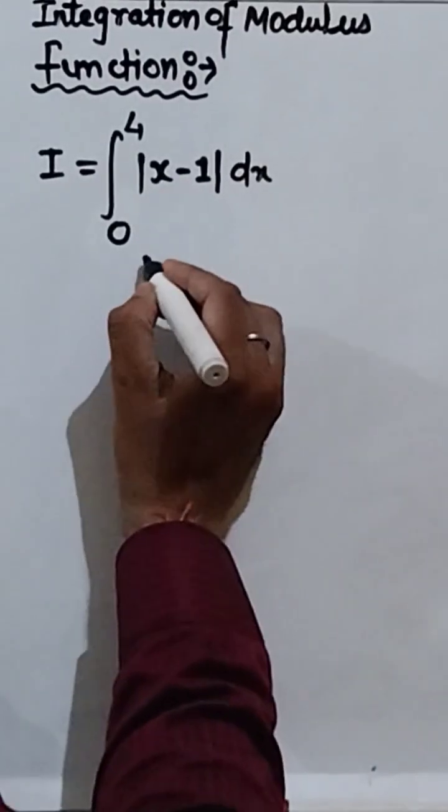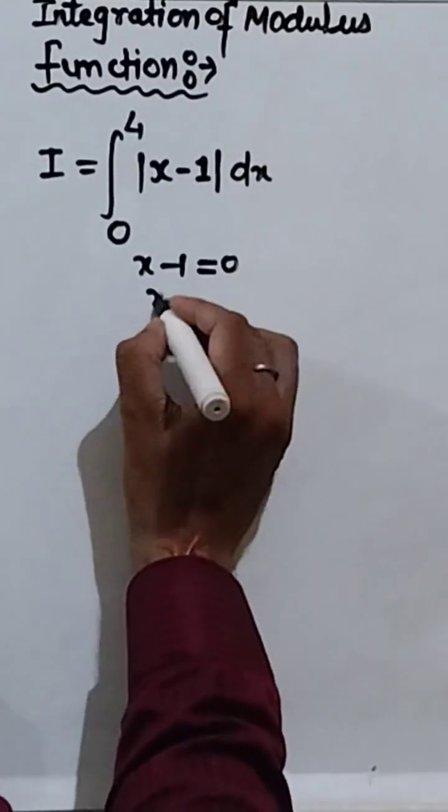So, we are going to solve the integration of modulus function. How can we take x minus 1 is equal to 0? Then x will be equal to how much? 1.